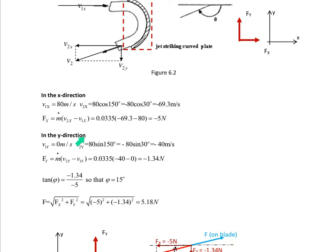In the Y direction, there is no velocity entering in the Y direction, but there is one leaving in the Y direction, downwards, which is minus 80 sin 30, which is minus 40. We apply again the momentum equation, mass flow rate, leaving is minus 40, entering is 0 and we get minus 1.34 newtons in the negative direction of Y.